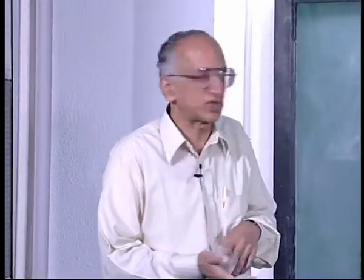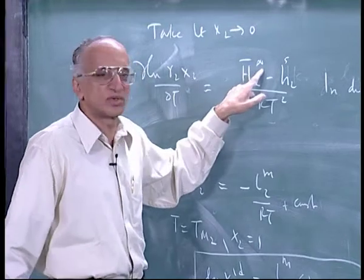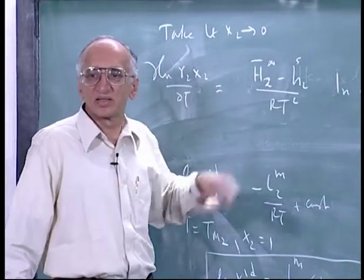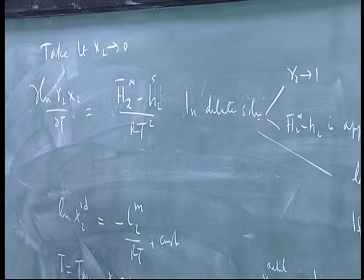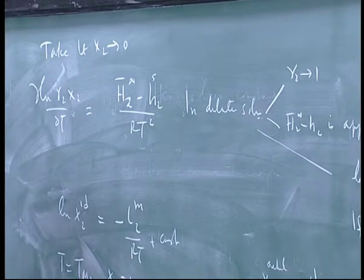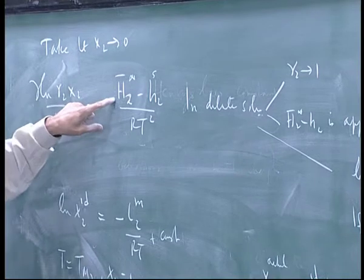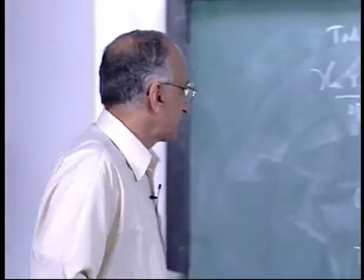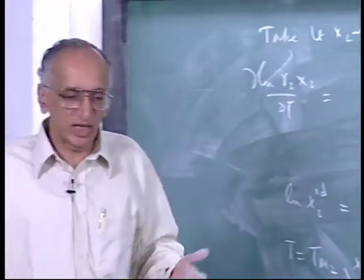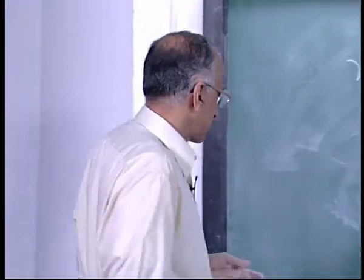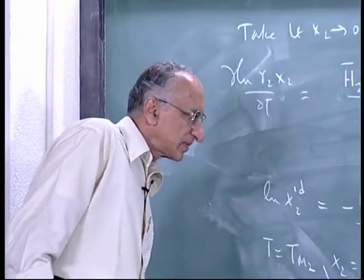We will also discuss different units for the models for chemical potential — molality units — and polymer solutions separately. In polymer solutions, dilute means parts per million, not mole fractions of 0.01. Those are the only two remaining cases; the rest is just applications. So I will stop there.